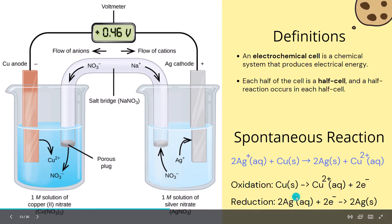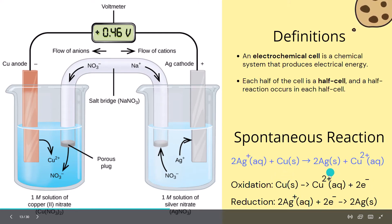By now you can see that one side is an oxidation reaction and the other is a reduction reaction — charge going from plus 1 to 0 on one side, and 0 to plus 2 on the other.